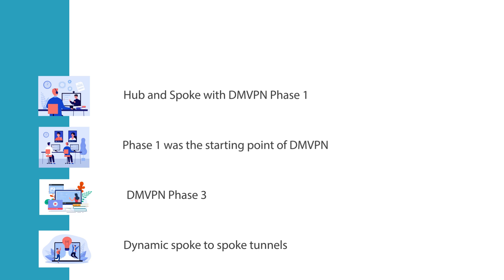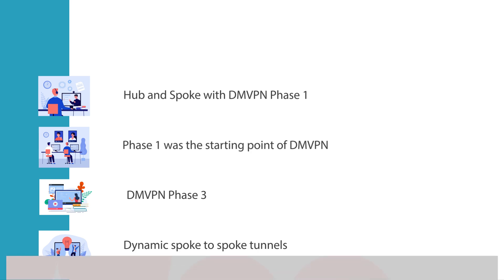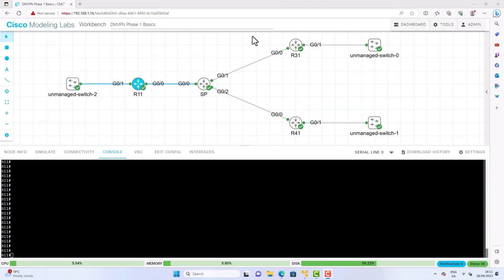DMVPN Phase 1 was a starting point of the DMVPN design phases. However, today you're probably going to see DMVPN Phase 3, which allows for spoke-to-spoke tunnels — this may be better suited for you if you don't need a true hub-and-spoke design. In this demo there will also be some troubleshooting, so after the demo you'll have a good understanding of both DMVPN Phase 1 and Phase 3.